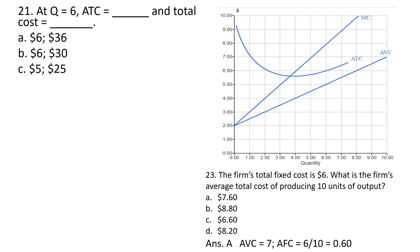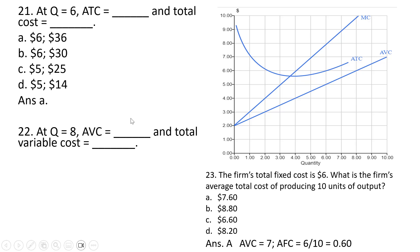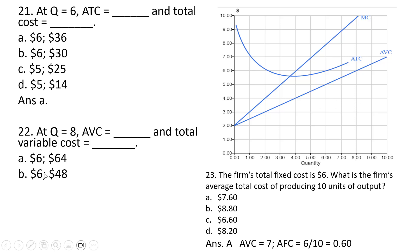Question 21. At Q equals 6, average total cost equals $6, and total cost equals average total cost times the quantity of output — 6 times 6 equals $36. The correct answer for question 21 is A. For the next question, plugging 8 into the average variable cost curve, we see that average variable cost is $6. Total variable cost is just average variable cost times the quantity — 6 times 8 equals $48. Answer choice B is correct.